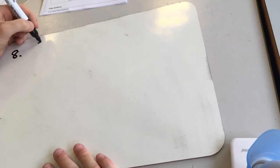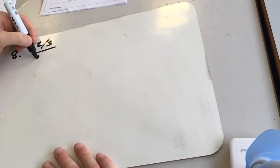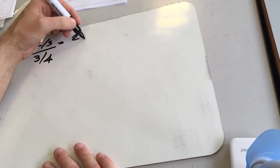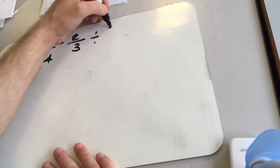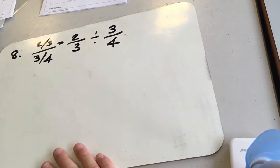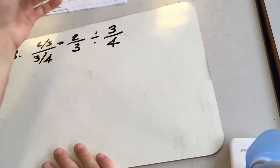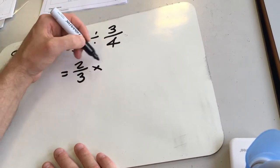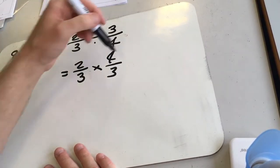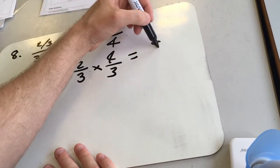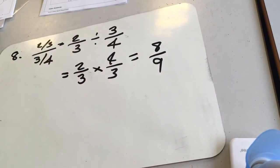Okay, question 8, 2 thirds over 3 quarters. So we're going to write that as 2 over 3 divided by 3 over 4. Flip this one, so we get 2 thirds times 4 thirds. So we get 8 on the top and 9 on the bottom, so 8 ninths.